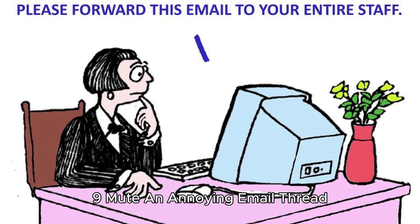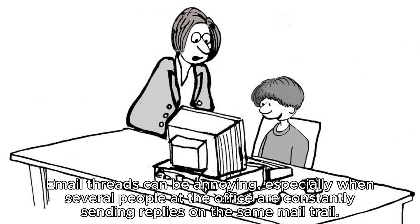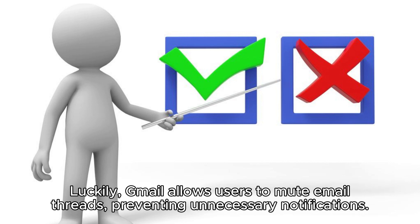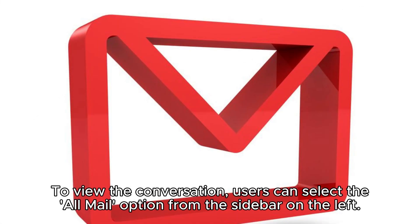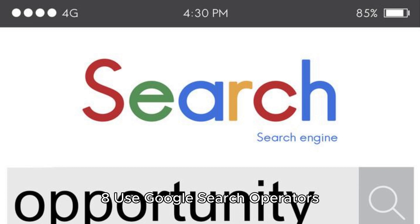Hack 9: Mute an annoying email thread. Email threads can be annoying, especially when several people at the office are constantly sending replies on the same mail trail. Luckily, Gmail allows users to mute email threads, preventing unnecessary notifications. To do this, open the email thread, tap on the three dots at the top of the interface, and select 'Mute' from the available options. To view the conversation, users can select the 'All Mail' option from the sidebar on the left.